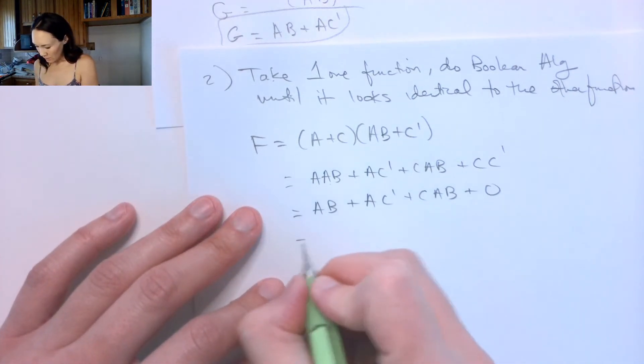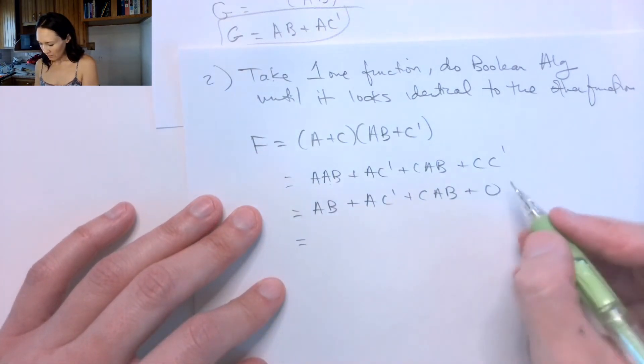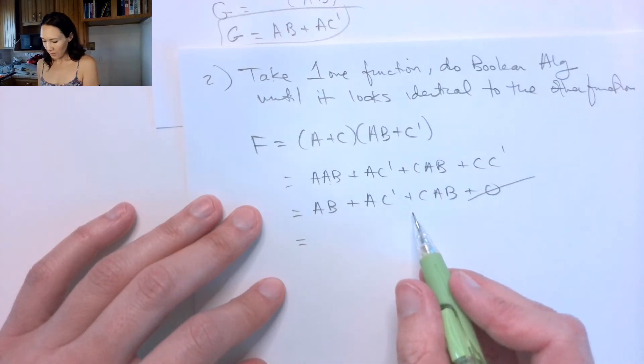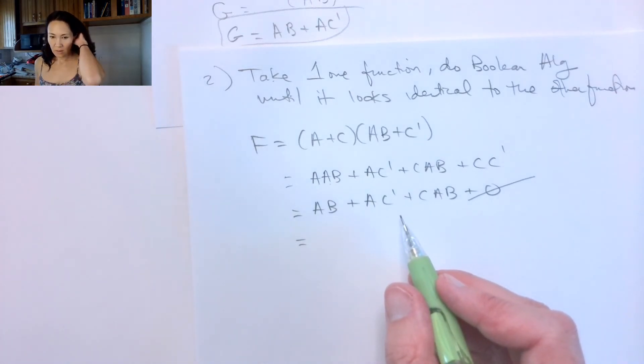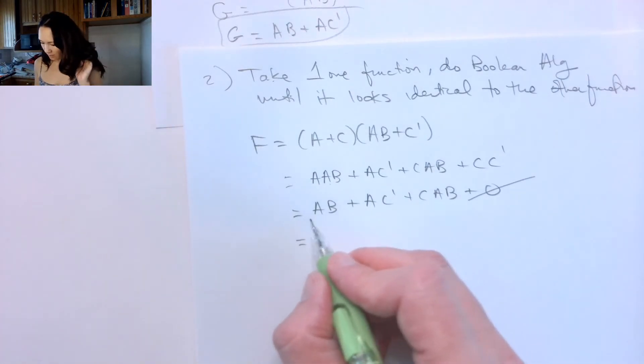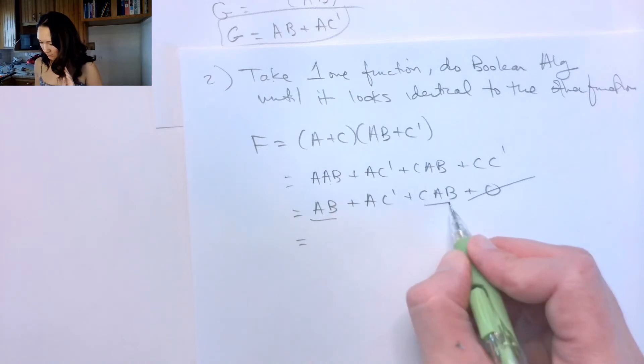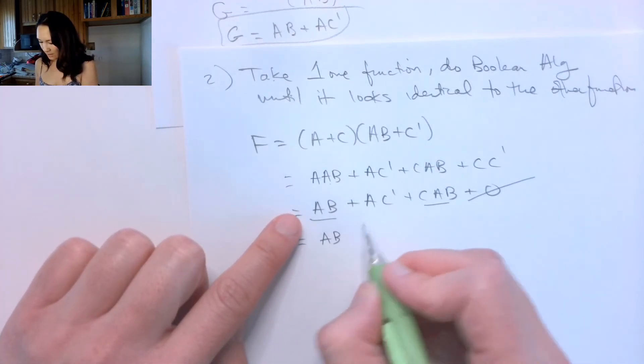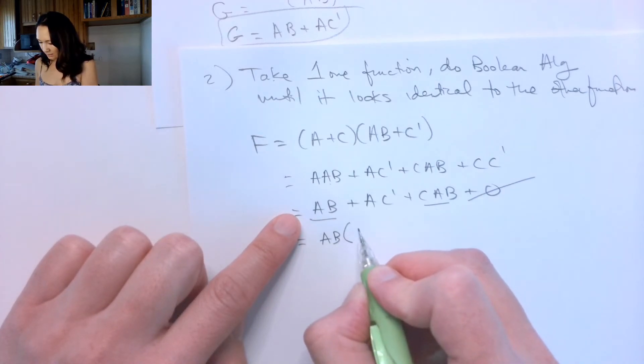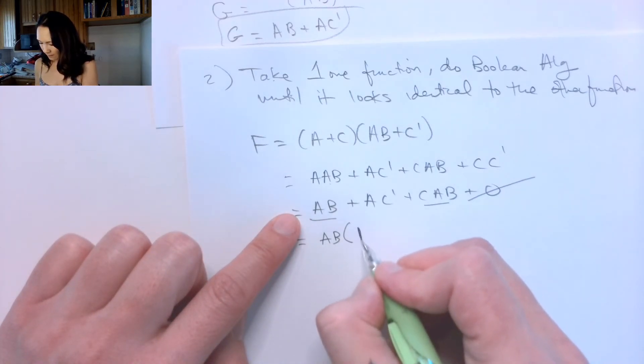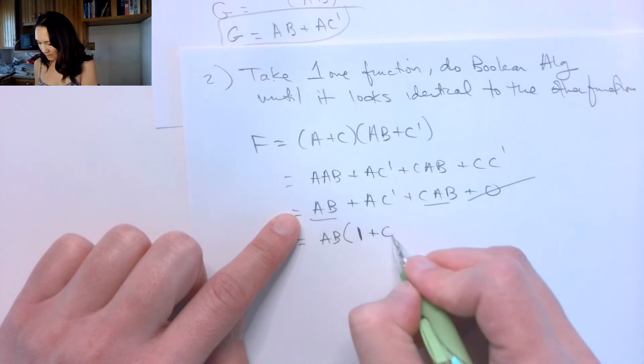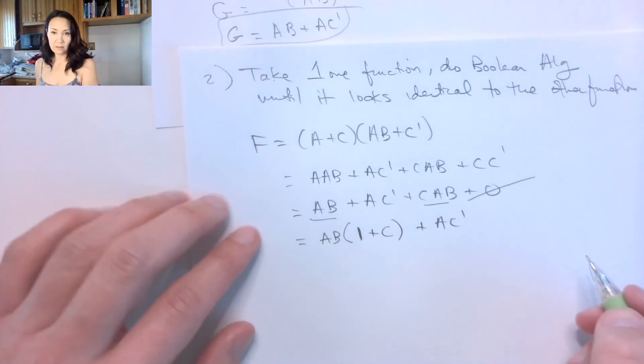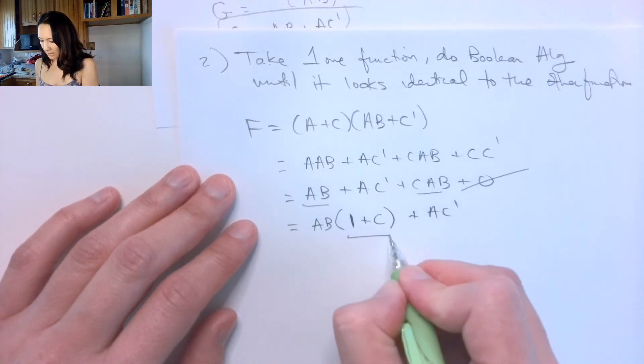Now if I don't worry about that zero term, but I notice that I have an AB common to this and to this, then I can factor an AB out. So I factor an AB out of this first term, I get one. I factor an AB out of this term, I get a C. And then I still have this OR AC'.